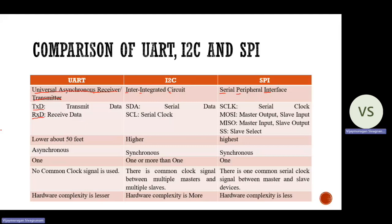In I2C also we have two signals: one called SDA, which represents serial data, and another called SCL, which represents serial clock. Whenever the clock frequency is applied to the device, the data is transmitted from master to slave in a serial manner.